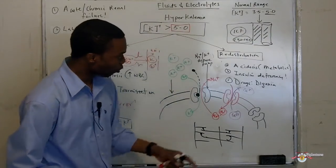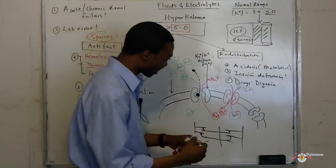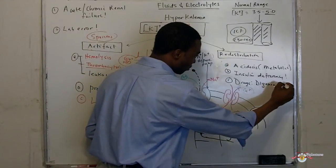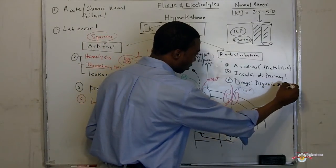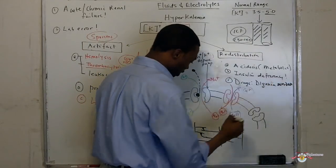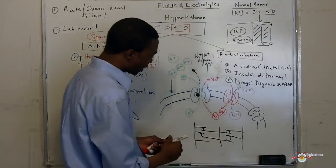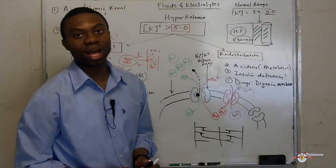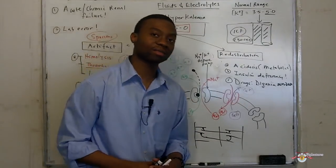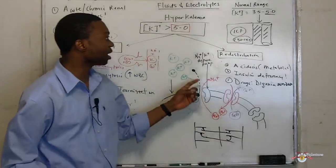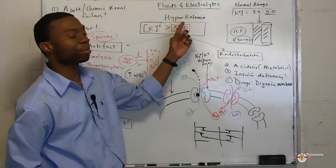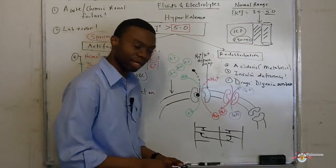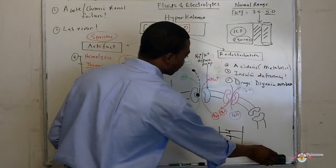However, when you have digoxin overdose, potassium is forced to stay outside of the cell and you develop hyperkalemia. That is the mechanism of action.